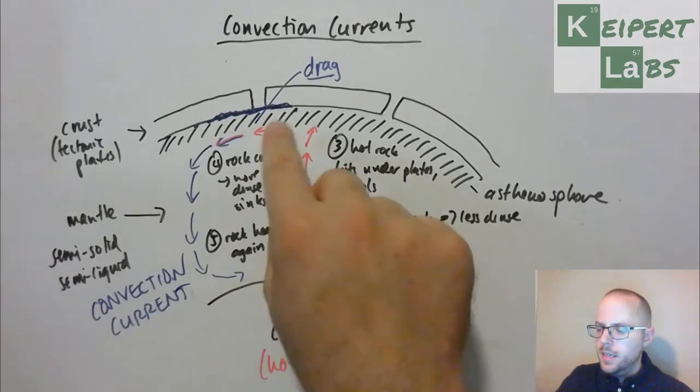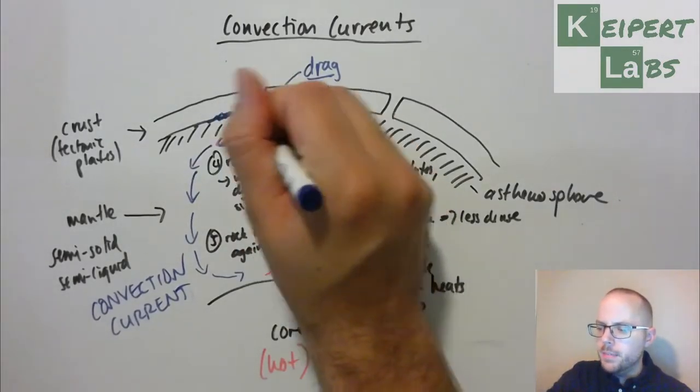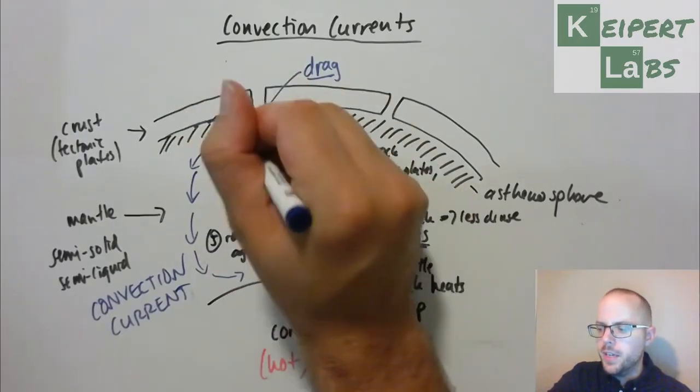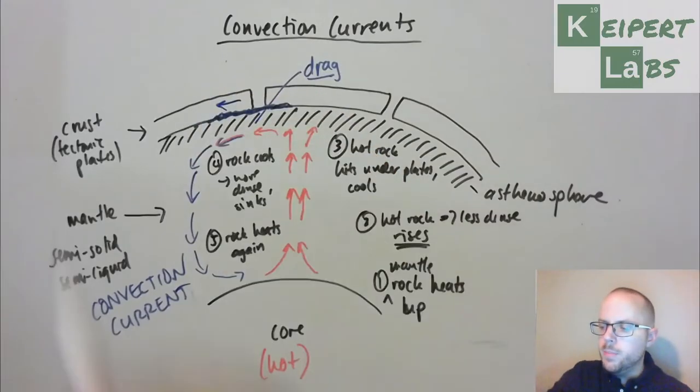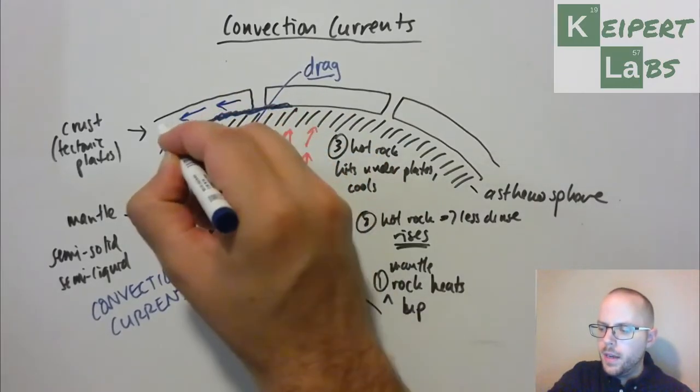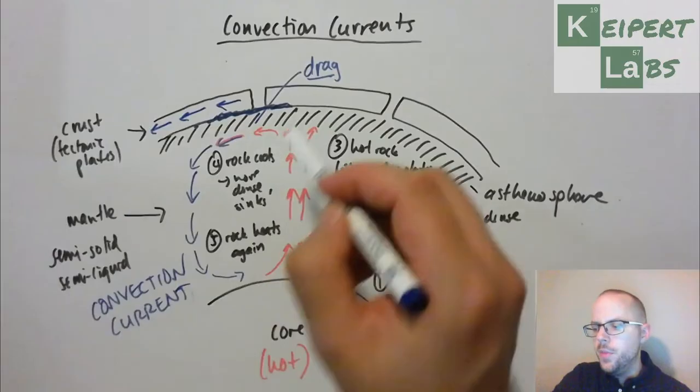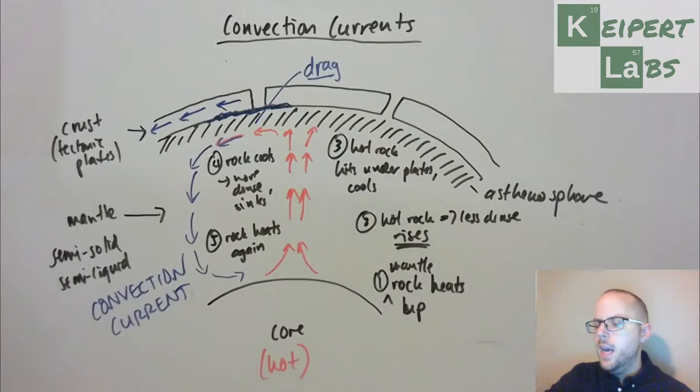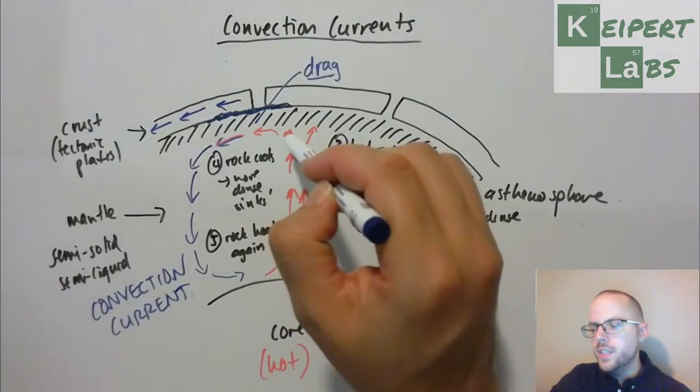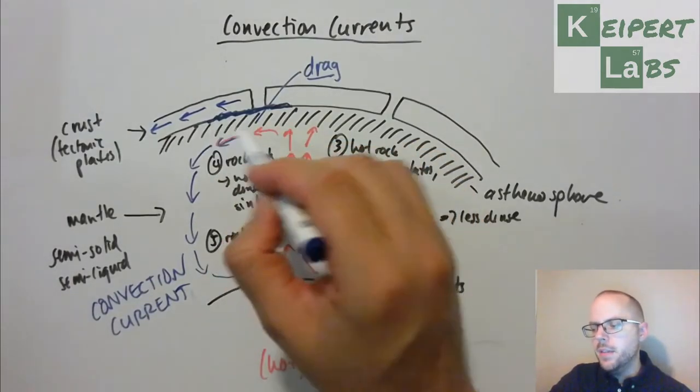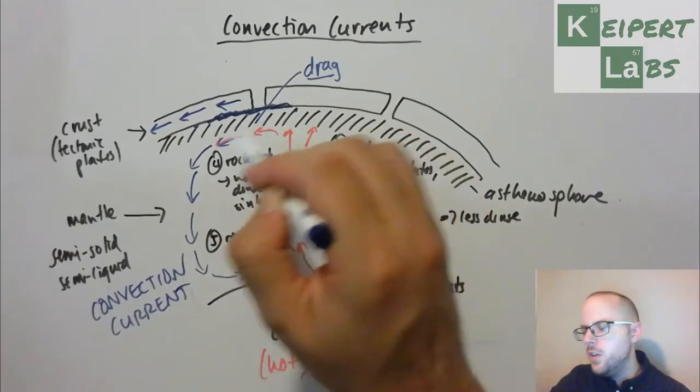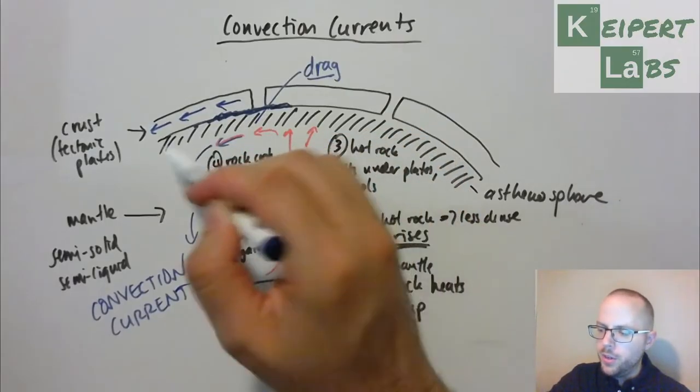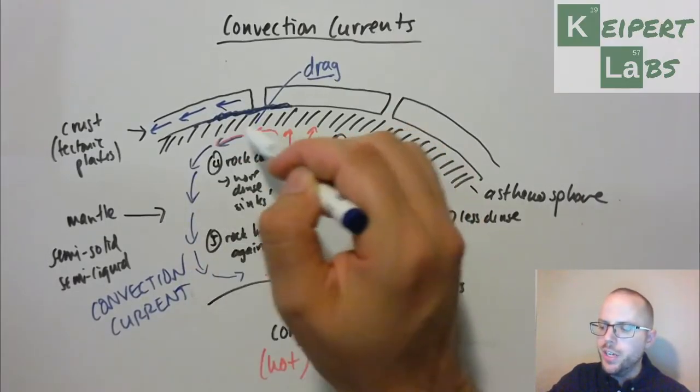And so what that does is that now where this moving mantle rock has made contact with the tectonic plate, it slowly is moving this way. Now it's very slow because there's an incredible amount of mass in this tectonic plate. It's not an easy thing to get moving. But as this convection current continues to churn and continues to move, that tectonic plate, for as long as that rock is going underneath, it's pushing it away.